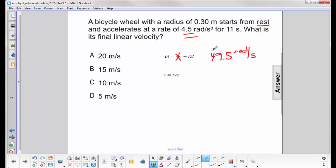So when I want to find my linear velocity, I take this number here. This is omega, my angular velocity at 11 seconds. That goes there. I take the radius of the wheel, 0.30 meters. That goes there. And when I finish the math, I get 15 meters per second. That's its final linear velocity.